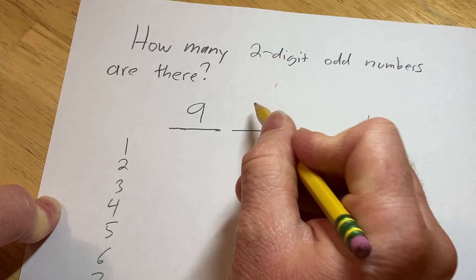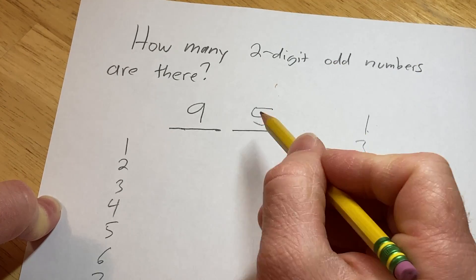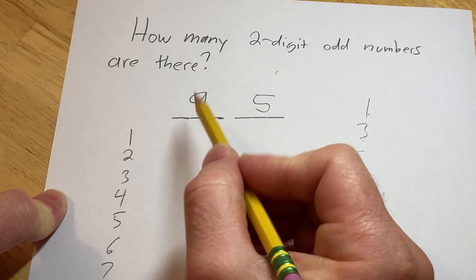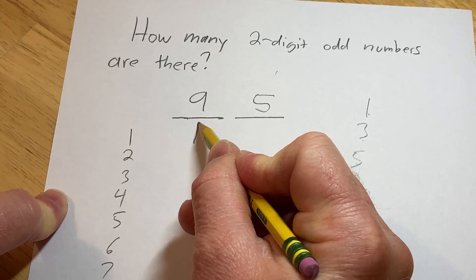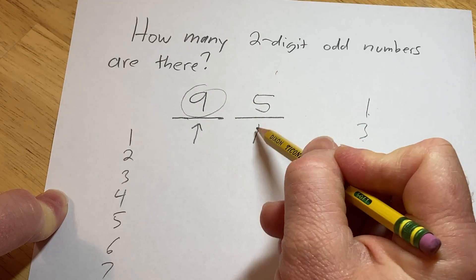So there are 5 choices for the second digit. If we're thinking about how many ways we can construct a two-digit odd number, the construction process requires two steps. It requires picking the first digit, and there are 9 ways to do that.